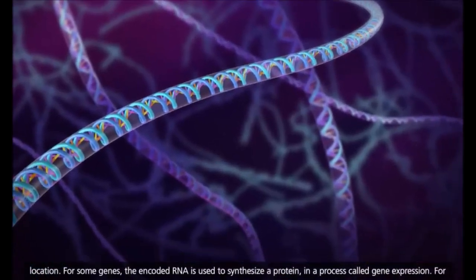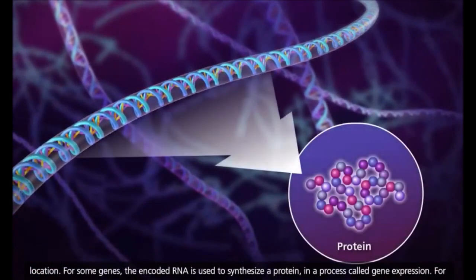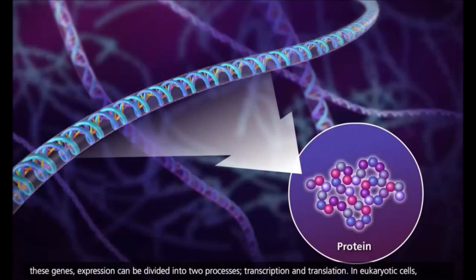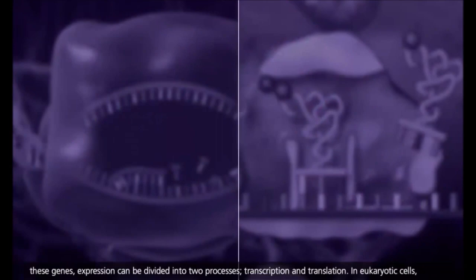For some genes, the encoded RNA is used to synthesize a protein in a process called gene expression. For these genes, expression can be divided into two processes: transcription and translation.